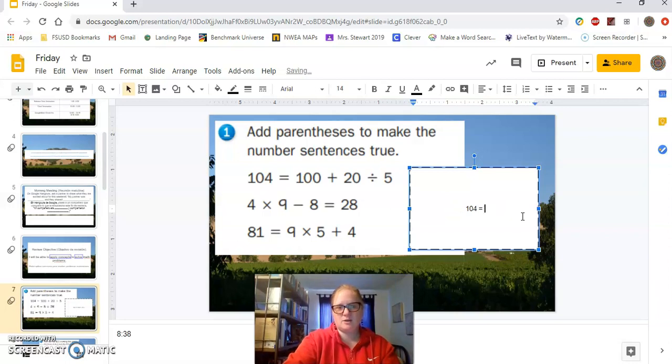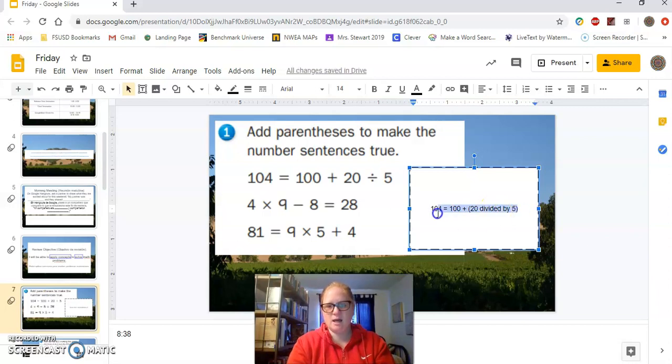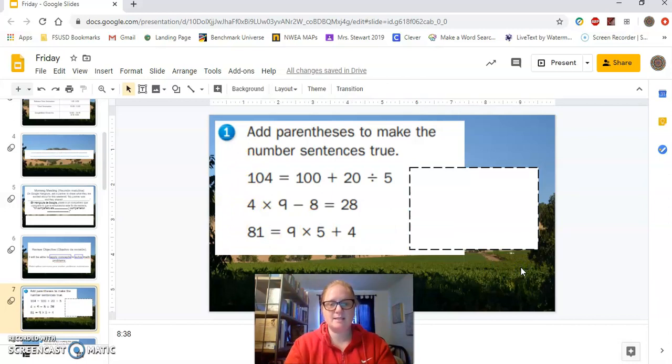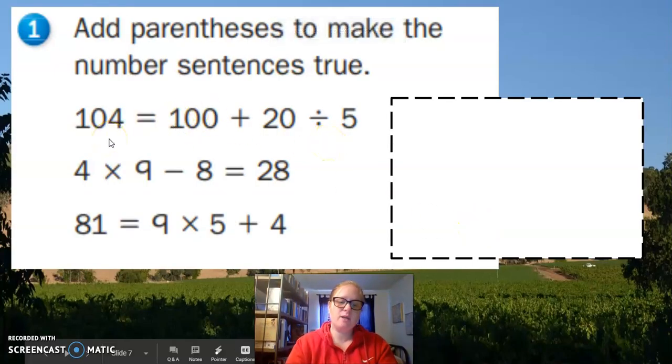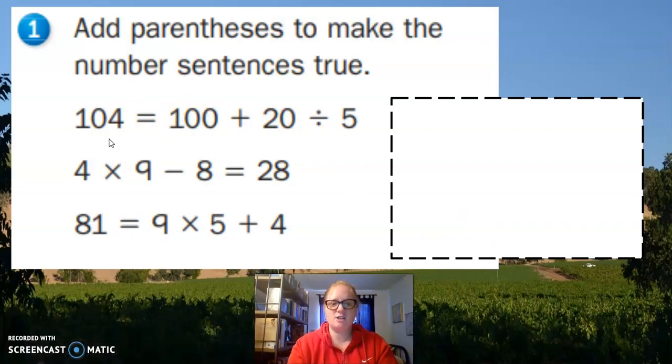Or, if you think it goes somewhere else, you would do 100 + (20 ÷ 5). Some people have been writing in divided, and that's fine too. Whatever makes it easy, and I will be able to know where exactly you're putting in those parentheses. And remember, when we are solving equations, parentheses always come first. So what would make each of these number sentences true really depends on where you're putting in the parentheses. After you put in the parentheses, solve and see if it makes it true. If it doesn't make it true, then you know that you need to change where the parentheses go.